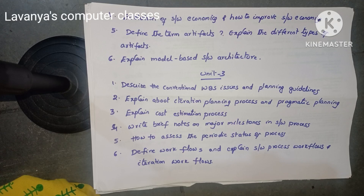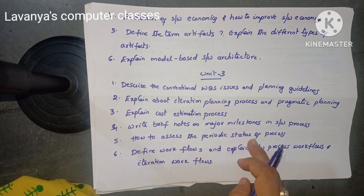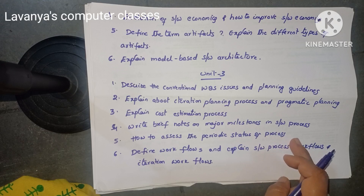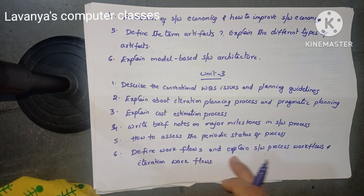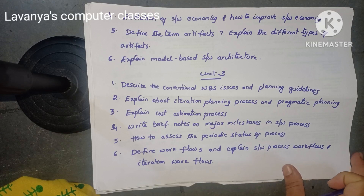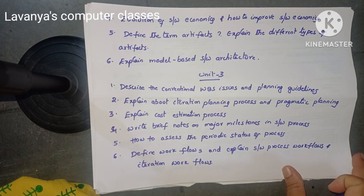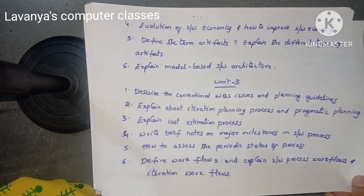Either major milestones or minor milestones may be asked. How to assess the periodic status of a process — important question. Define workflows and explain software process workflows and iteration workflows. Sometimes they also ask the difference between software process workflows and iteration workflows. These are the important questions in Unit 3.